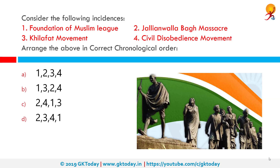Consider the following incidents: Number one: Foundation of Muslim League. Number two: Jallianwala Bagh Massacre. Number three: Khilafat Movement. Number four: Civil Disobedience Movement. Arrange them in the correct chronological order. The correct order is one, two, three, four. The Foundation of Muslim League happened in 1906. The Jallianwala Bagh incident happened on 13th April 1919. The Khilafat Movement was between 1919 and 1924. The Civil Disobedience Movement was in 1930.